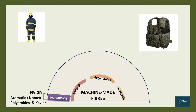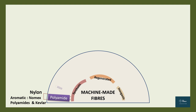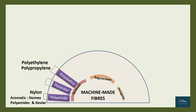Polyester is one of the most widely used fibers today. Then we have polyolefins — polyethylene and polypropylene. The next group is the vinyl fibers, with the important fibers in this group being acrylic, Teflon, and mod acrylic.